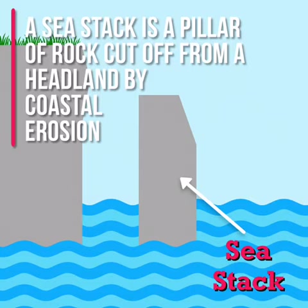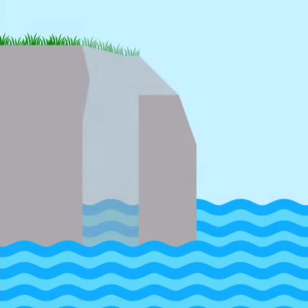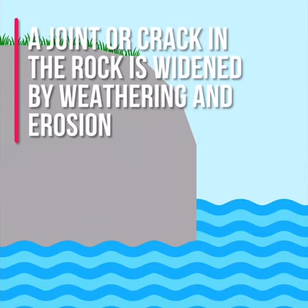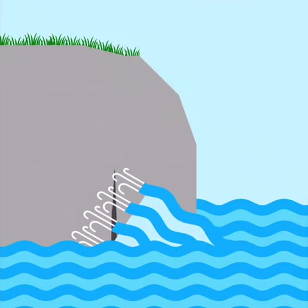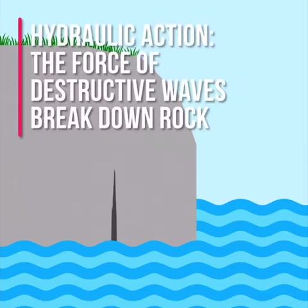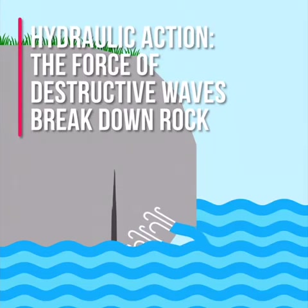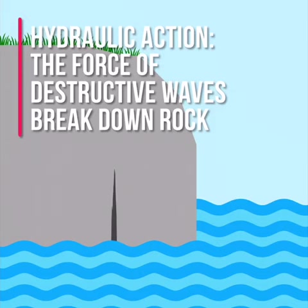A sea stack is a pillar of rock that has been cut off from a headland or cliff by coastal erosion. To begin, a joint or crack in the rock is widened by weathering and erosion. Destructive waves continually attack the coastline. This is caused by processes of coastal erosion such as hydraulic action, where the force of destructive waves break down coastal rocks.